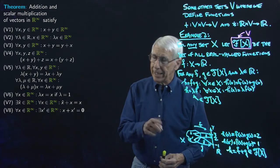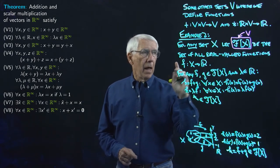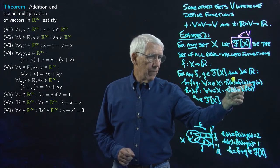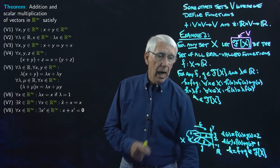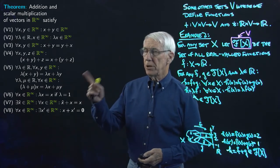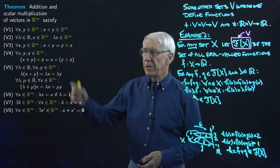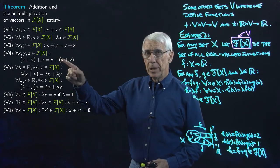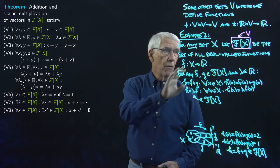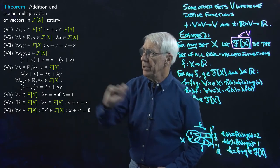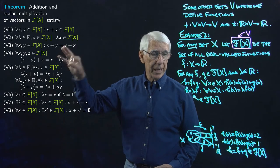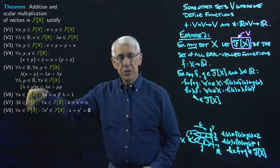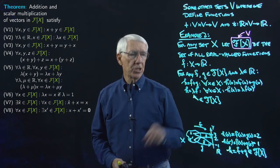Both operations produce elements of F(X), since the results are real-valued functions defined on domain X. We could then show very easily — and it might be a good exercise — that this set, playing the role of V, together with the operations of vector addition and scalar multiplication, satisfies V1 to V8. V1 and V2 say that the set is closed under addition of functions and scalar multiplication of functions, and the other six properties follow with elementary simple proofs.